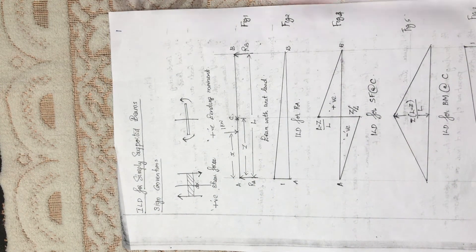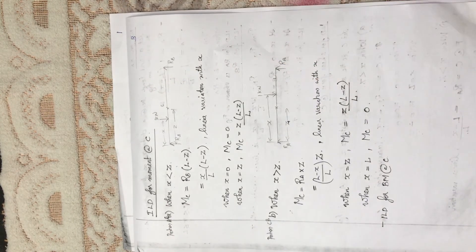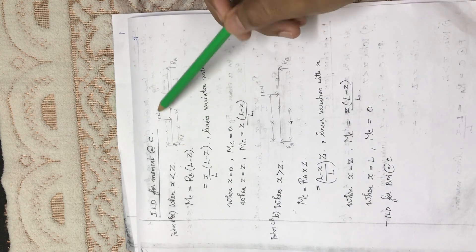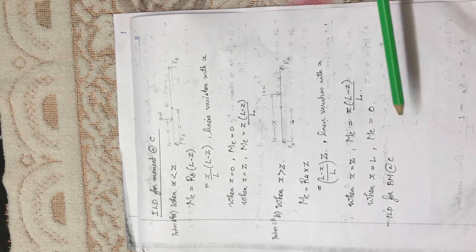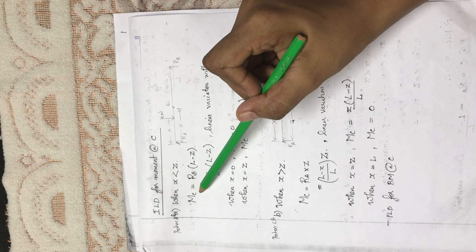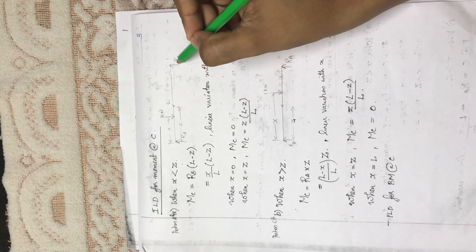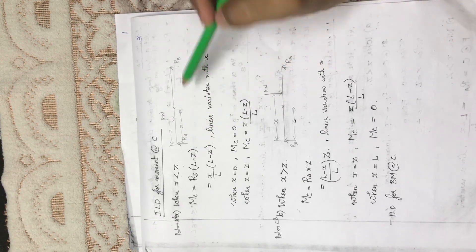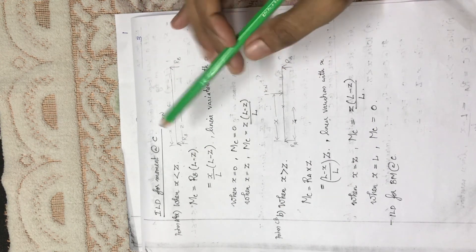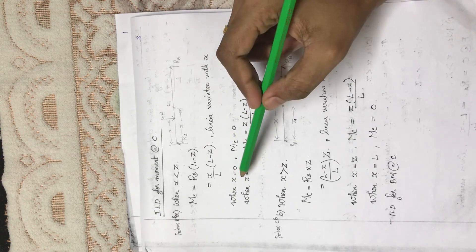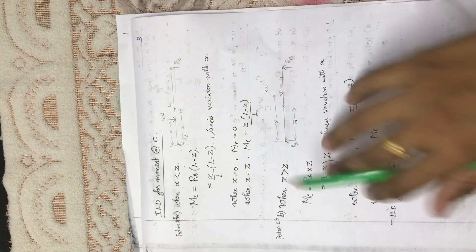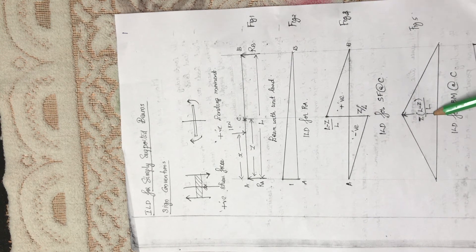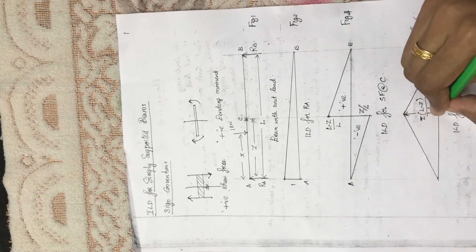Next is the influence line diagram for the bending moment at C. Again consider two spans: AC (H < Z) and CB (H > Z). For span AC, the bending moment at C equals RB × (L − Z). Here RB = H/L, so MC = H/L × (L − Z). Applying limits: when H = 0, MC = 0; when H = Z, MC = Z(L − Z)/L.